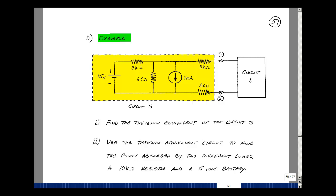This lesson deals with an example using Thevenin's Theorem. You can find these notes in the ECE 201 e-book in Chapter 3, starting on page 59. Consider the following example, where I have a circuit with multiple sources and some resistances hooked up to a load, and we're going to find the power absorbed by various loads that are hooked up here.